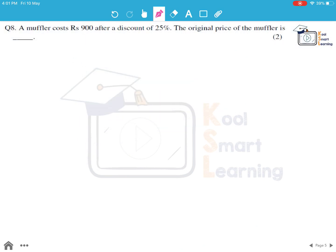Moving on to the last question of this session. A muffler costs Rs. 900 after a discount of 25%. The original price of the muffler is... So let us take the original price of muffler to be X. So after a discount of 25%, the discount is 25 by 100 into X, which is X by 4.